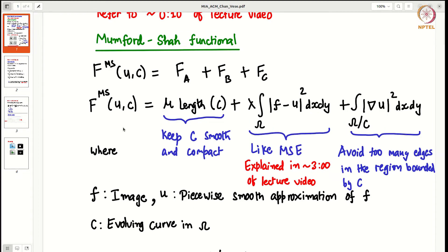The first term penalizes for large length of the contour. So its objective is to keep C smooth and compact.